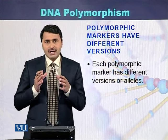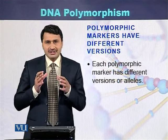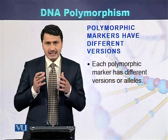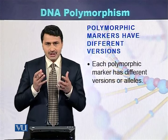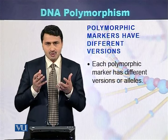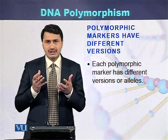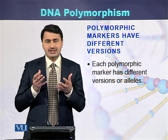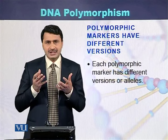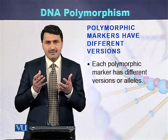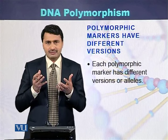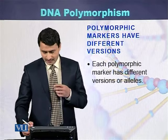Polymorphic markers have different versions. There can be two versions or two alleles, or there can be more than two alleles, as in the case of polygenic traits where there are multiple alleles or multiple versions of the polymorphisms.